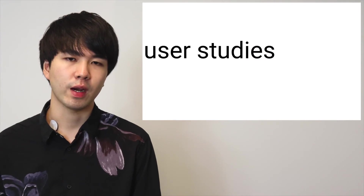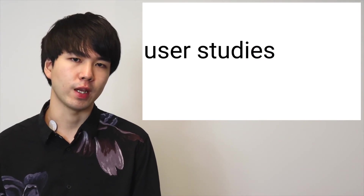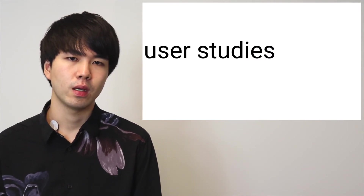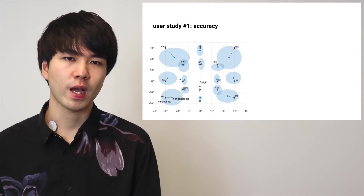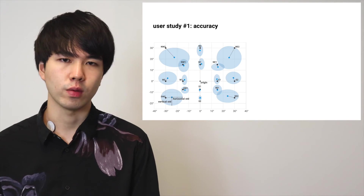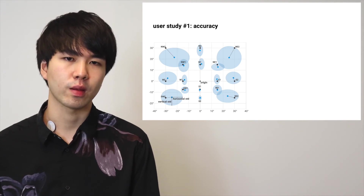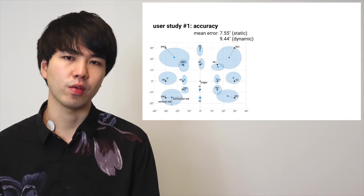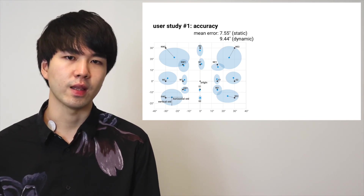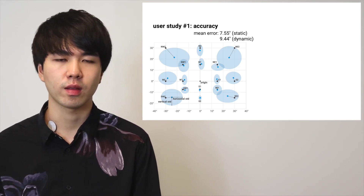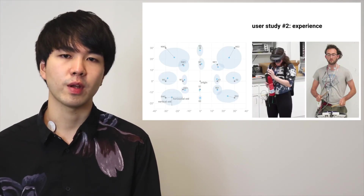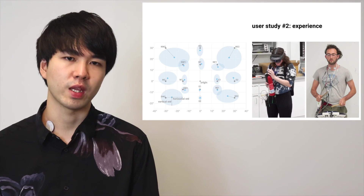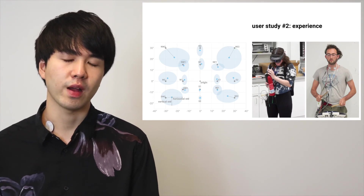We evaluated electrical head actuation in two studies. In the first study, we validated the control accuracy by actuating the participant's head orientation to acquire different targets. We found that our system has an accuracy of around 8 degrees for static targets and around 9 degrees for moving targets. In our second study, we explored participants' experiences across our four applications.